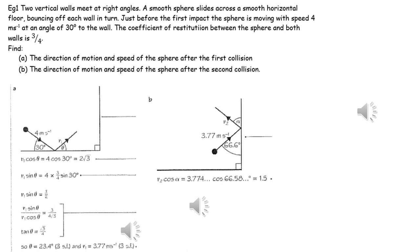This diagram is showing the impact with the vertical surface. We already know that V1 is 3.77 metres per second, and the angle it's coming in at that vertical surface will be 90 minus the value of theta from the first part, and therefore is 66.6 degrees.